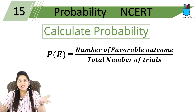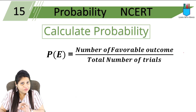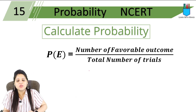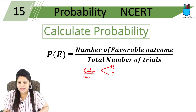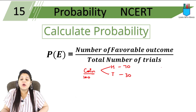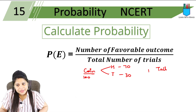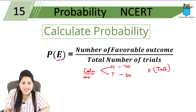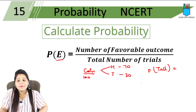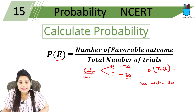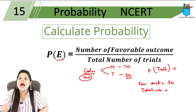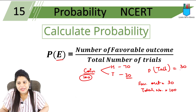Now let's calculate probability. It is very simple: number of favorable outcomes divided by total number of trials. For example, you tossed a coin 100 times — it came up heads 70 times and tails 30 times. If I ask the probability of getting tails, the favorable outcome is 30 and total number of trials is 100. So probability equals 30 upon 100, which simplifies to 3 upon 10.